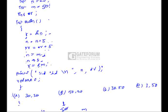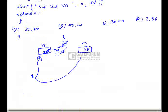So r will be pointing to m. In the printf statement we are printing the value of n and the value at the address r. The value of n is 3 and the value at the address r is 50, so 3 comma 50 will be printed. The correct option is option D.